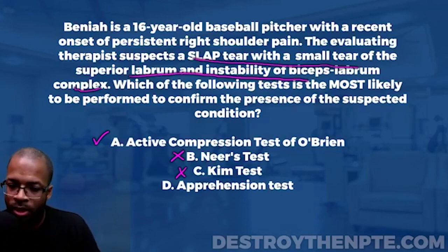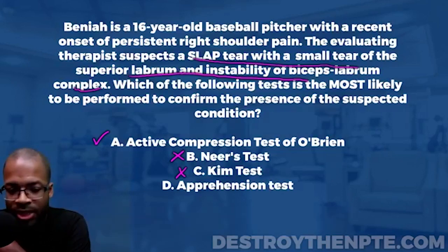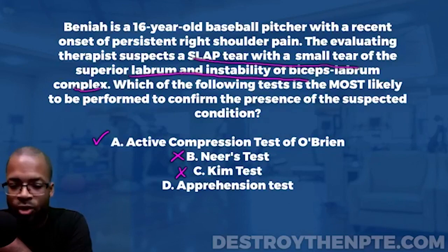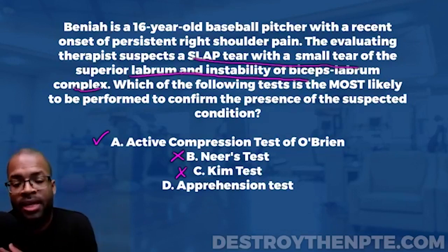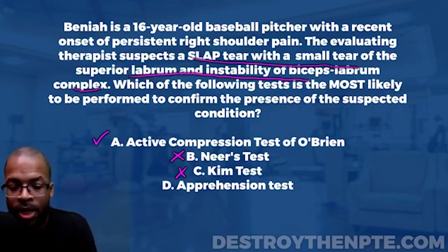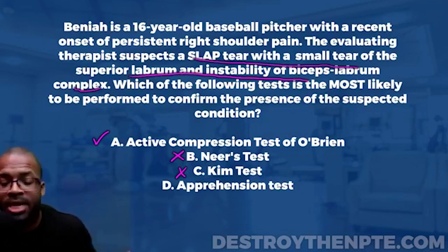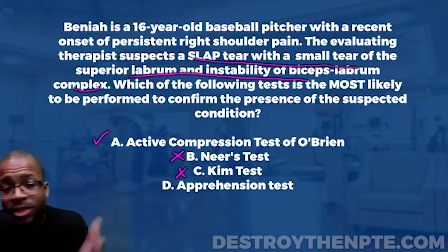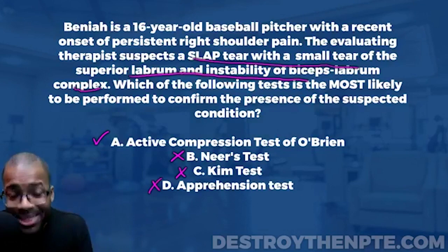Answer D is the apprehension test. The patient lies supine with the arm at 90 degrees of abduction and 90 degrees of elbow flexion, and we slowly externally rotate. We watch for the patient becoming apprehensive — alarmed, resisting, scared the humerus might pop out anteriorly. The apprehension test is primarily looking for anterior capsular instability or anterior dislocation. That's not what our patient has, so the answer is no.